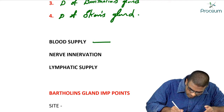Let's discuss Bartholin's gland in more detail. The function of Bartholin's gland is to produce alkaline mucus during sexual activity or sexual intercourse. Bartholin's gland is located in the superficial perineal pouch — a very important MCQ.